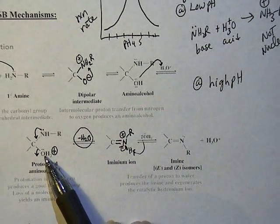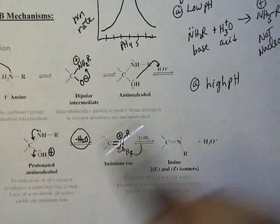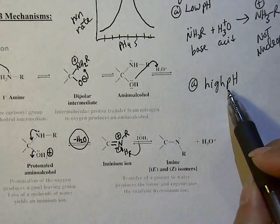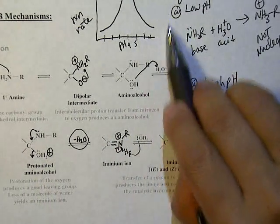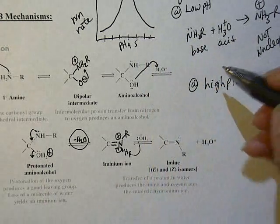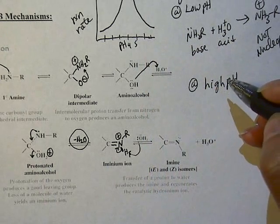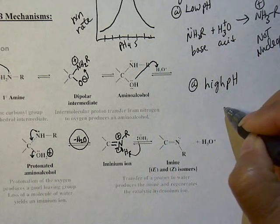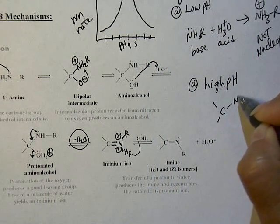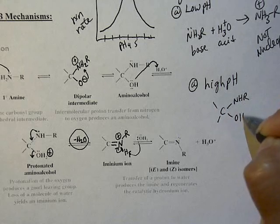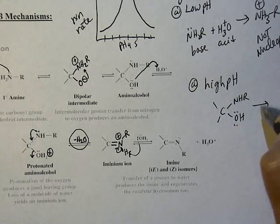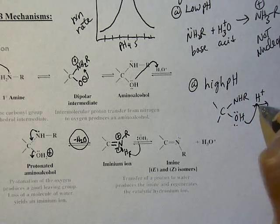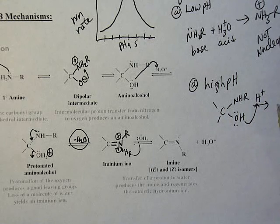But the second step, which is the amino alcohol now has to be protonated and form the water so that it leaves. If we have reactions going on at a real high pH, then we don't have proton around.